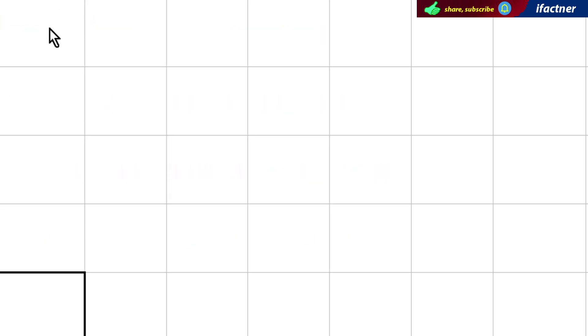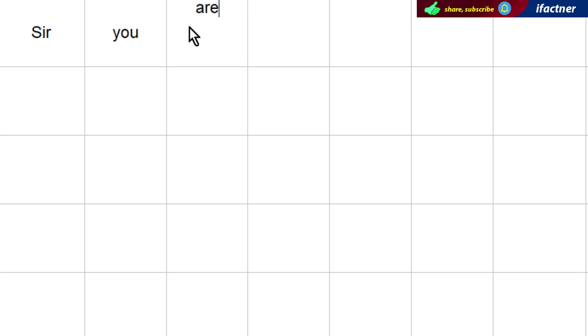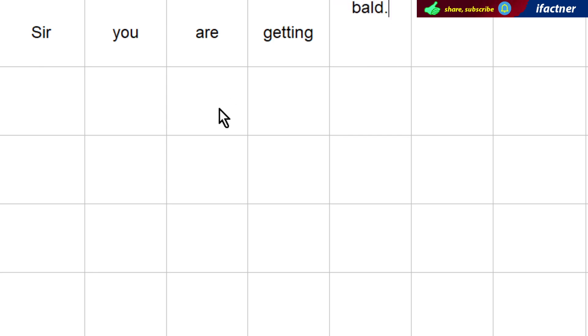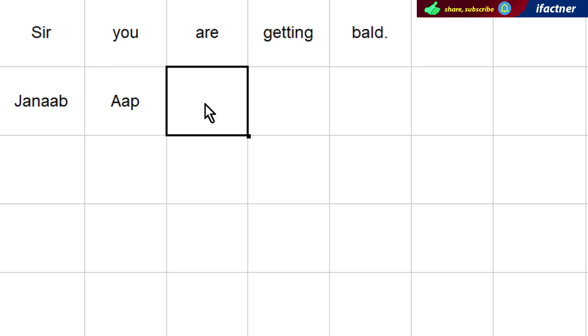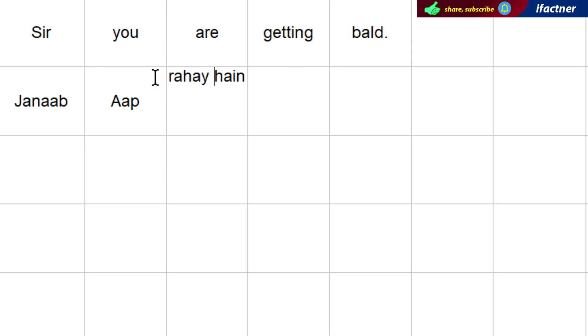Now the barber may suggest some kind of oil to use. He may say: 'Sir, you are getting bald.' 'Sir' can be translated as 'Janaab' or 'Sir', 'you' is 'aap', 'getting' is 'ho rahe', 'bald' is 'ganjay'. So: 'Janaab, aap ganjay ho rahe hain.'